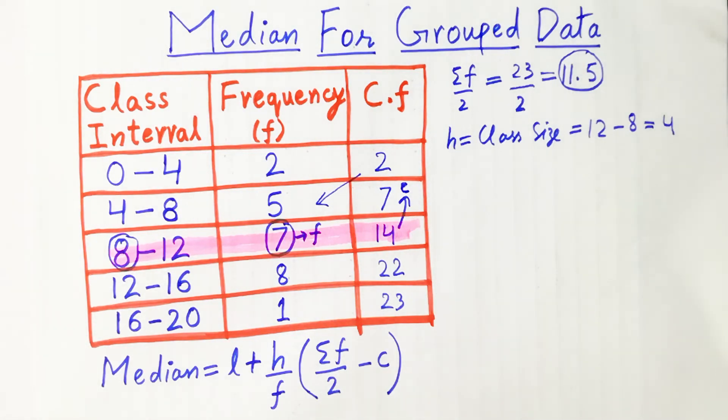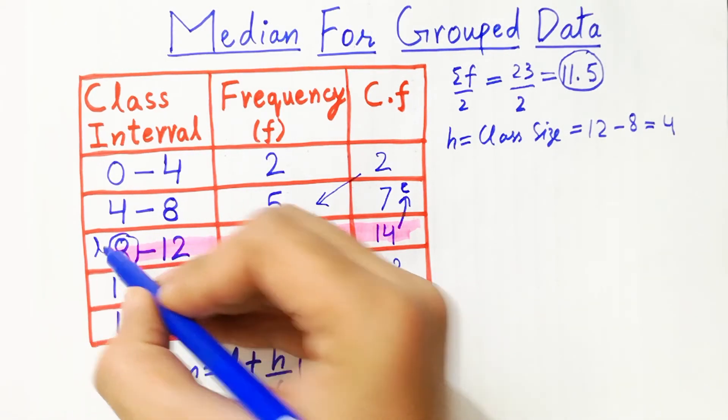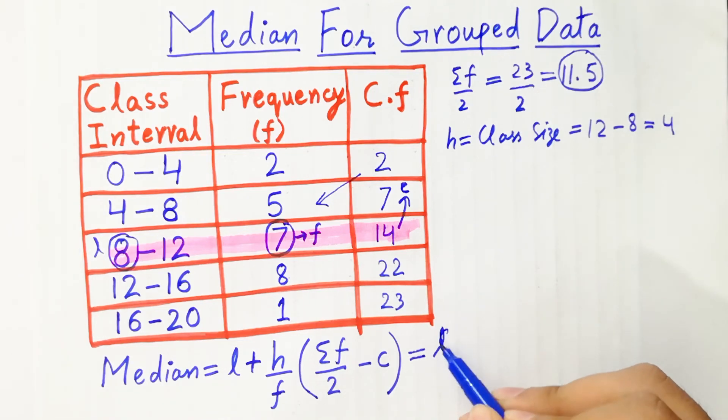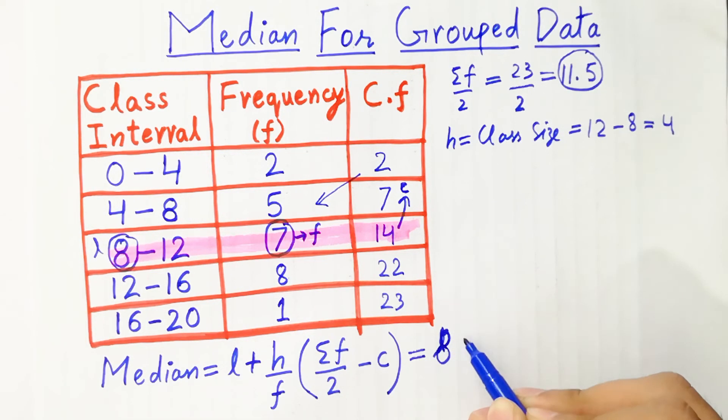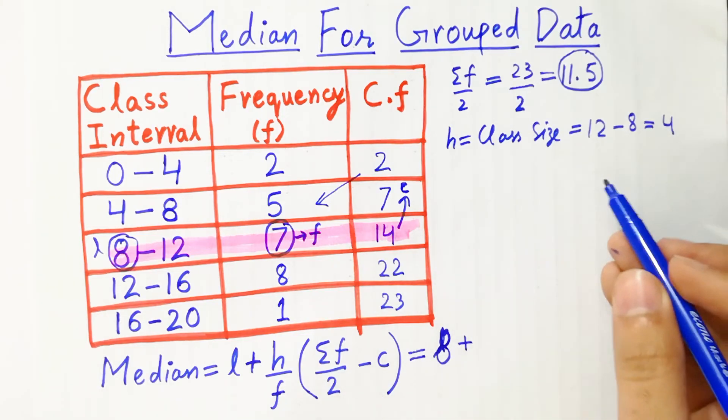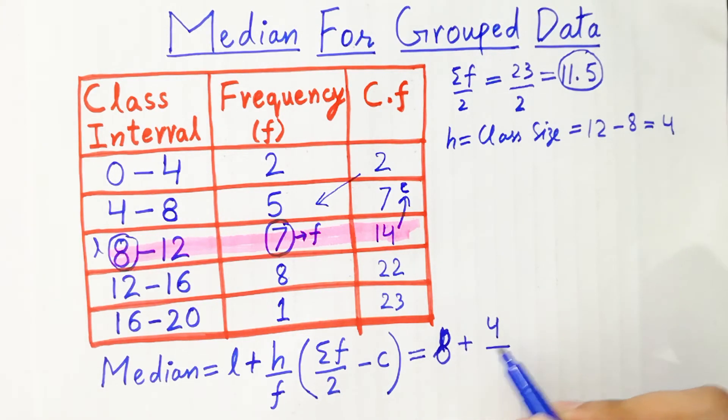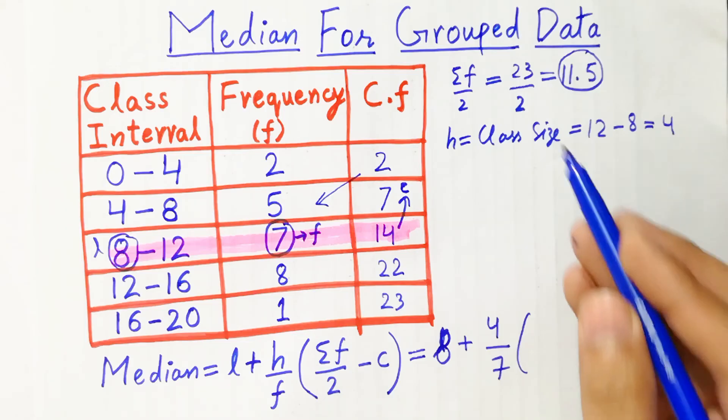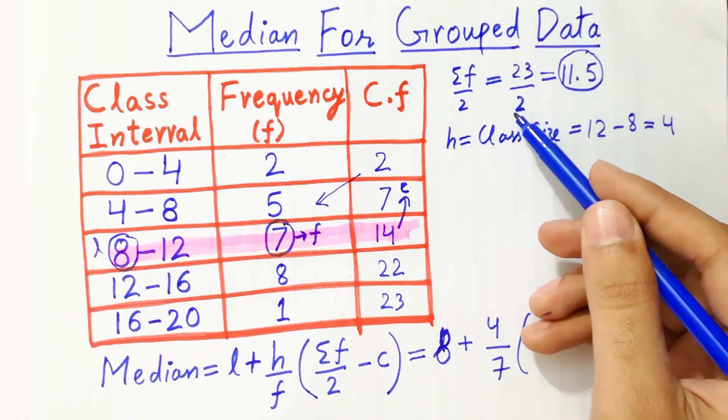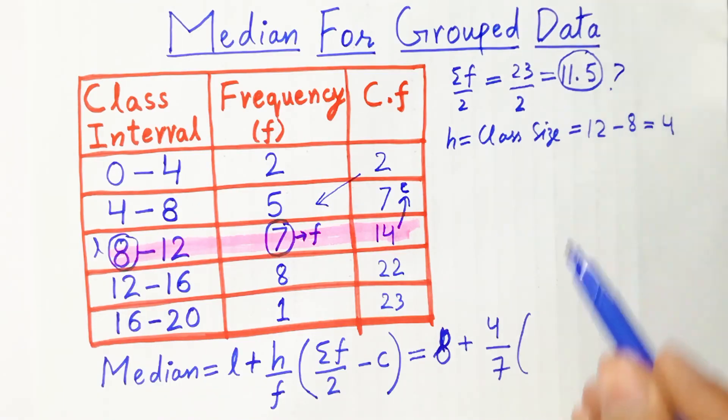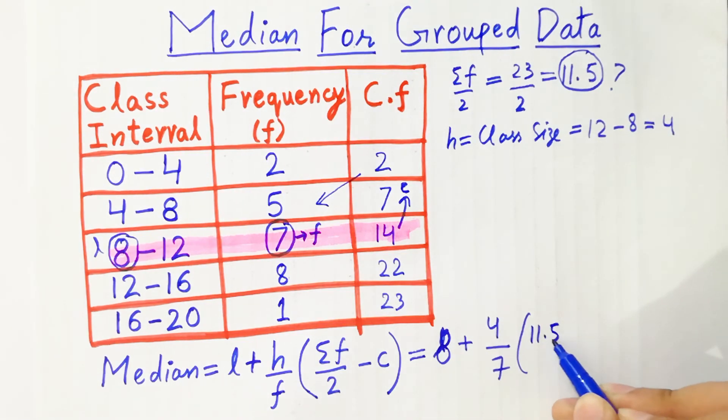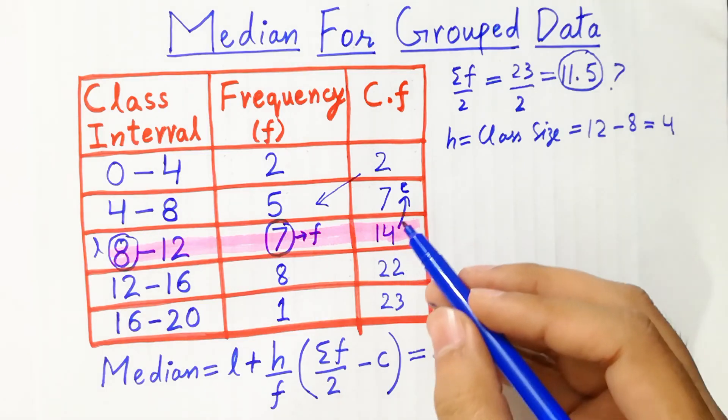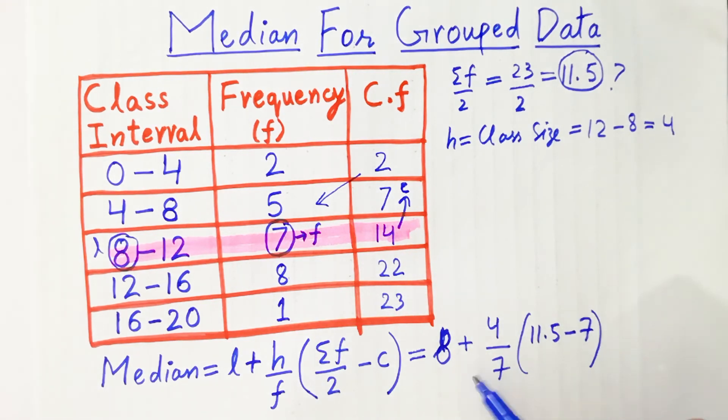Now you can easily calculate the value. l is 8, so the value will be 8 plus h class size, which is 4, divided by f. The f value is 7, bracket summation f over 2, which we already calculated as 11.5, minus c value, which is 7. You can easily solve this question. By solving this, we will get the answer.